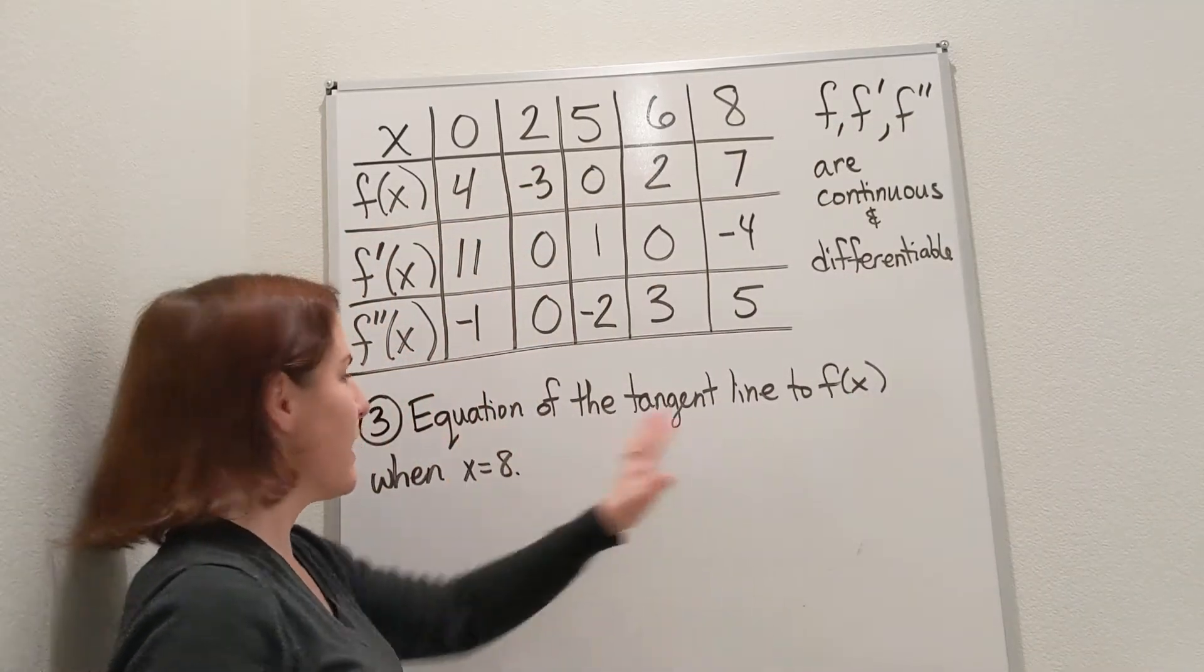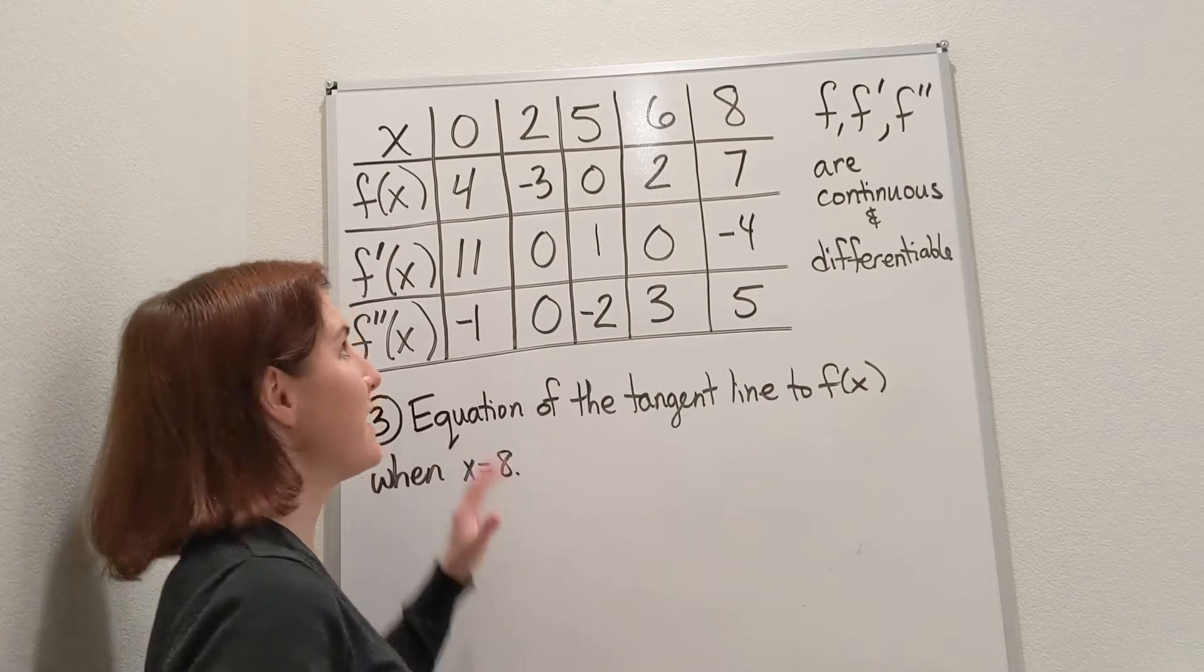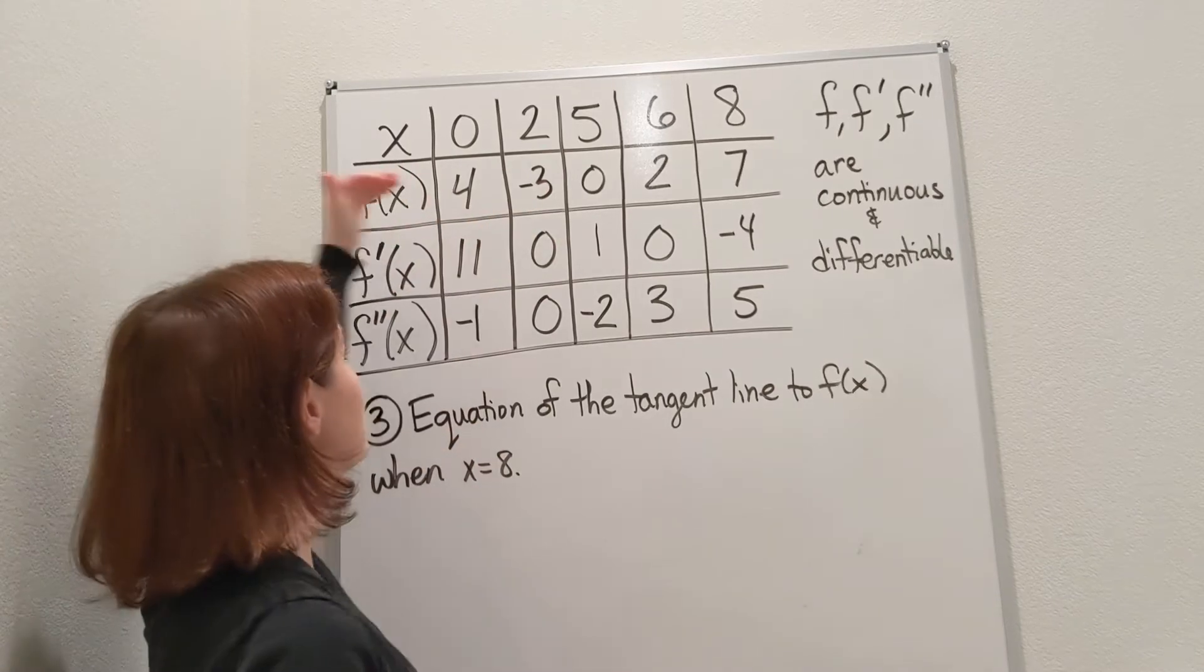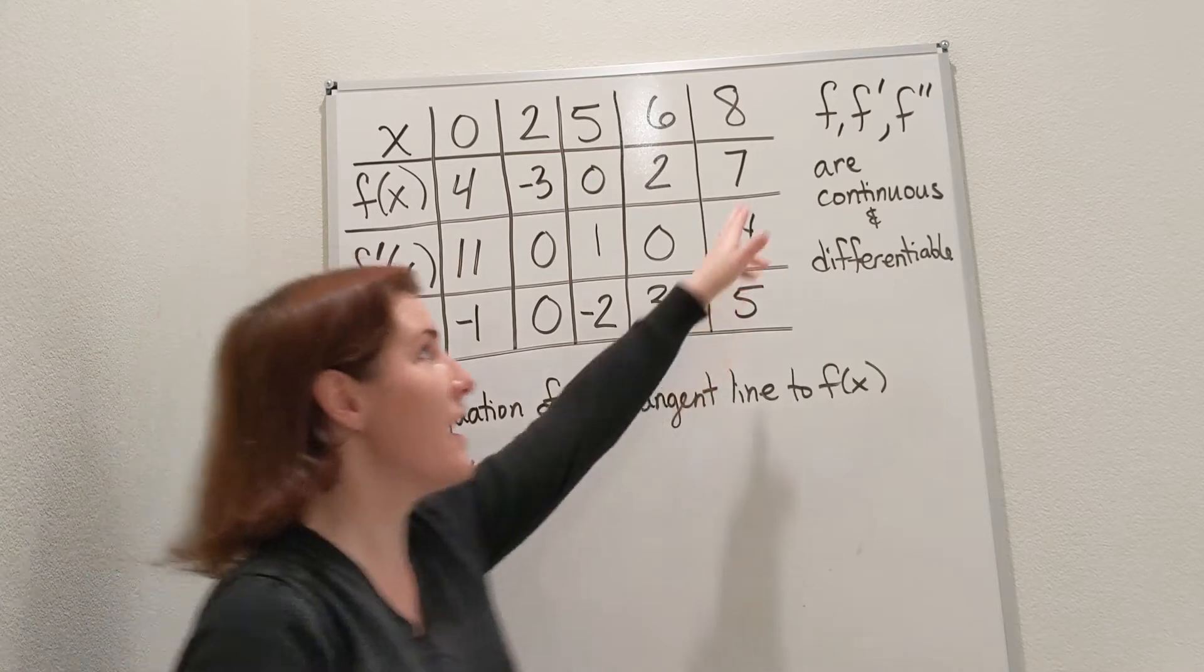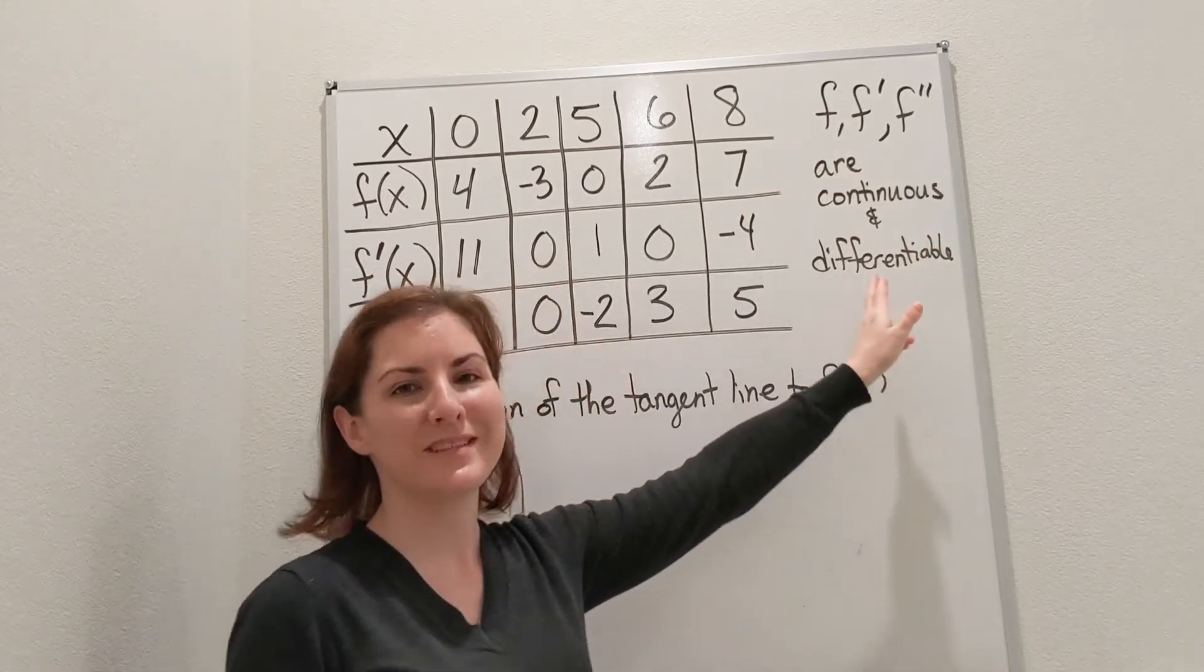I'm going to find the equation of the tangent line to f(x) when x equals 8. I have my table with x values and function, derivative, and second derivative values, and we know that all of those things are continuous and differentiable.